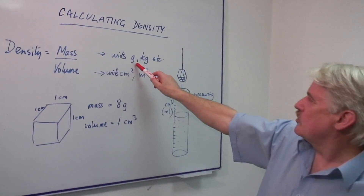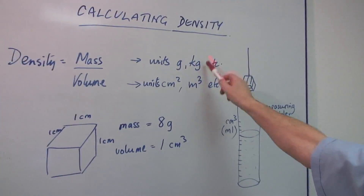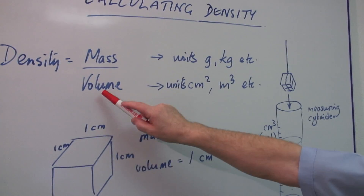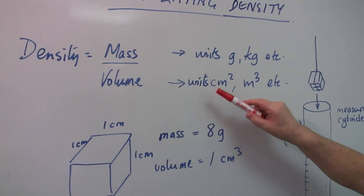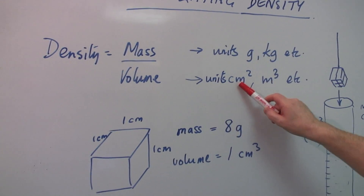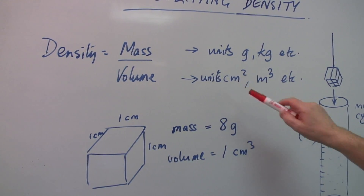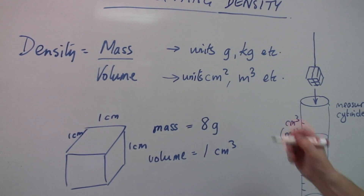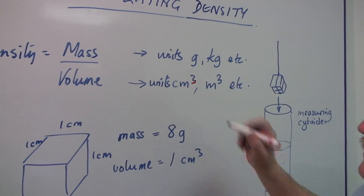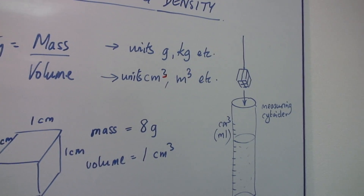Mass is measured in units of grams and kilograms. Volume is measured in units of centimeters cubed or meters cubed.